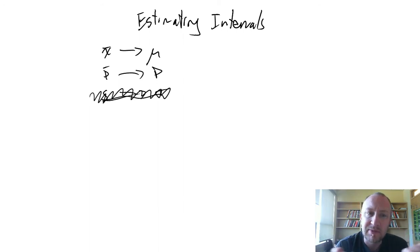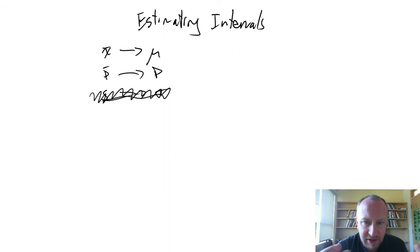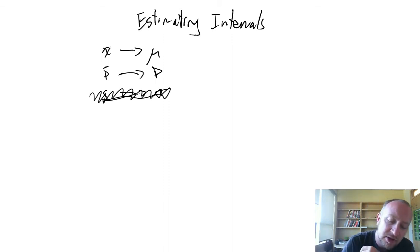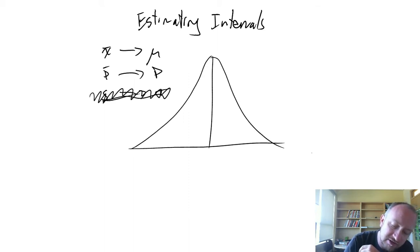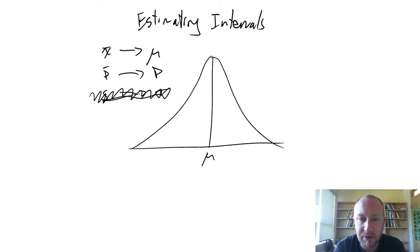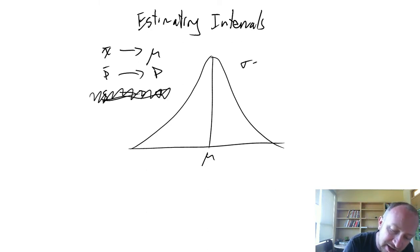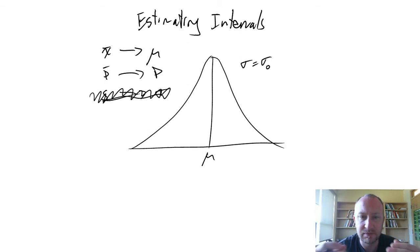What do we mean by this? In module 7, we looked at point estimates and sampling distributions. We have some idea of how sample means are distributed within a population. If this is my population, it has some standard deviation denoted sigma naught.